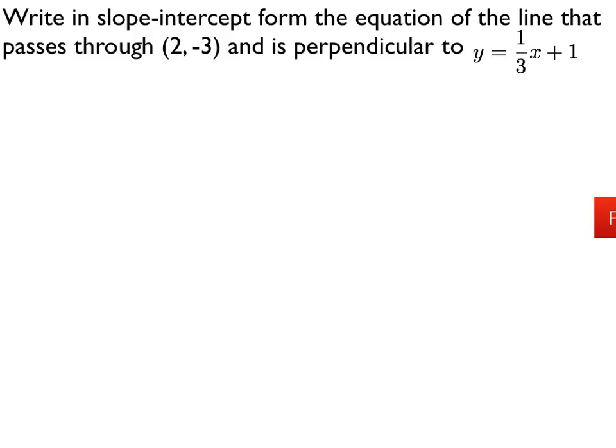This last example asks us for a line in slope-intercept form that passes through a given point, 2, negative 3, and is perpendicular to this given line, y equals 1 third x plus 1.